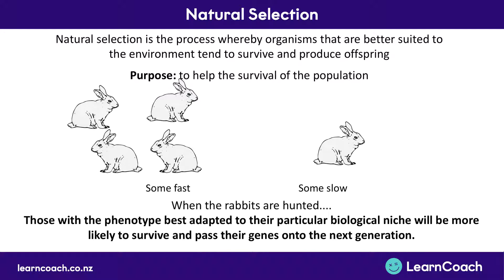To describe this benefit clearly in biological terms, the key word you want to use is phenotype. Phenotype means a physical characteristic — things like speed, height, or size are all physical traits or phenotypes. You can say the phenotype that's best adapted to an environment or a biological niche is the one most likely to survive and therefore most likely to pass on its genes.